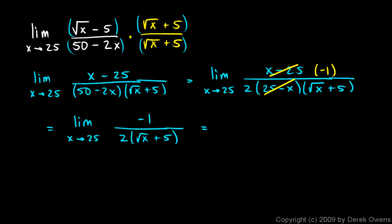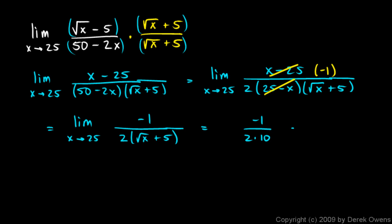And then I can evaluate that. I'll have negative 1 over 2 times the square root of 25, which is 5, plus 5 is 10. So it's negative 1 over 2 times 10, or negative 1 twentieth. And that's our answer.